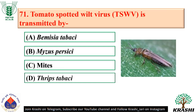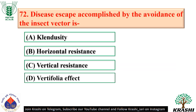Question number 71: Tomato spotted wilt virus is transmitted by Thrips tabaci — option D. Question number 72: Disease escape accomplished by the avoidance of the insect vector is clandestinity — option A. Here, a thick cuticle or hairy surface prevents or hinders inoculation.